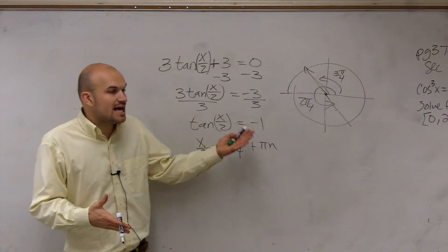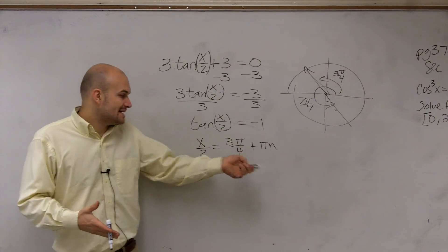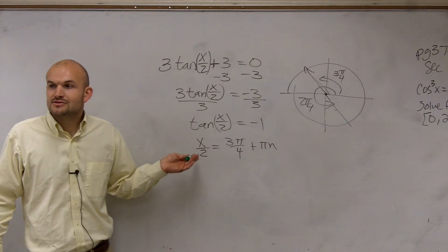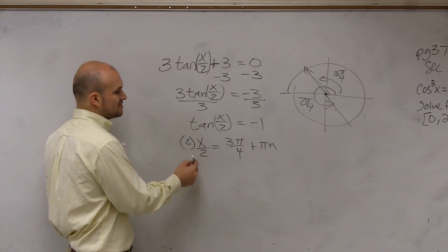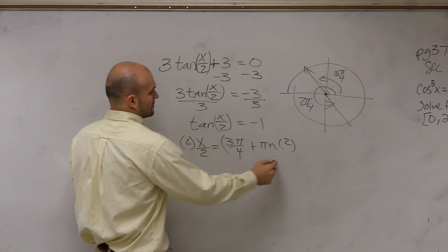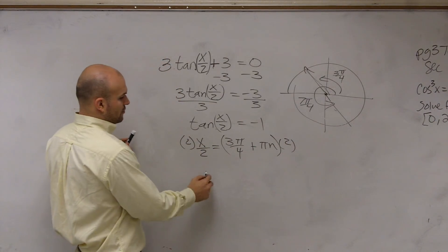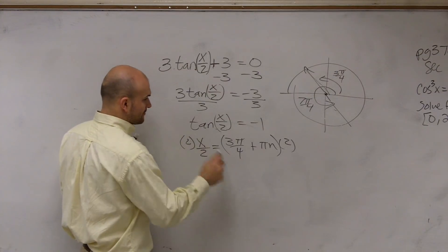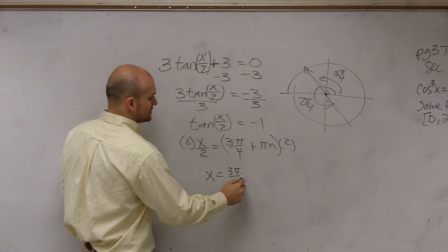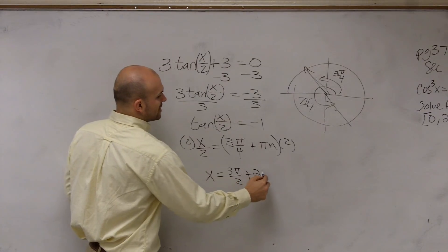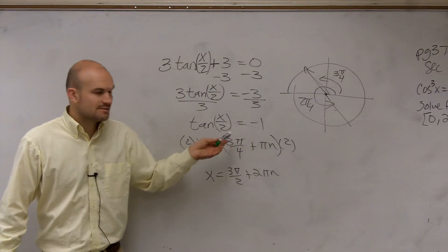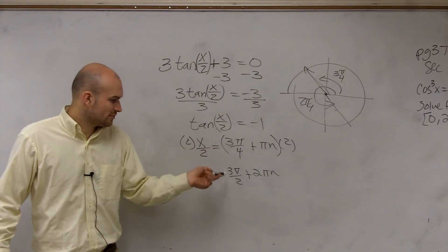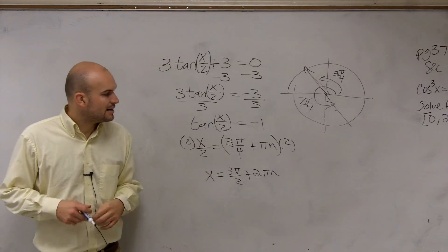Now, since we've evaluated for our function, now we can solve for the x. So to do that, we undo the division by multiplying by 2 on both sides. Therefore, we're left with x equals 3 pi divided by 2 plus 2 pi n. Because 2 times 3 is 6. 6 divided by 4 reduces to 3 halves, pi plus 2 pi n.